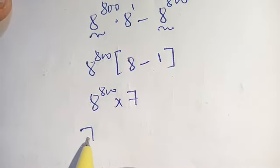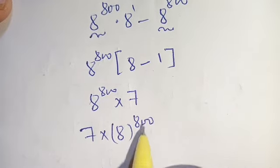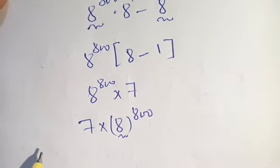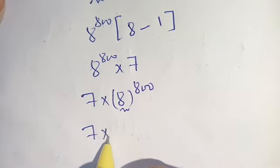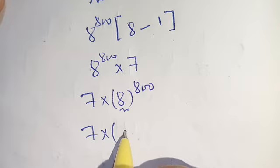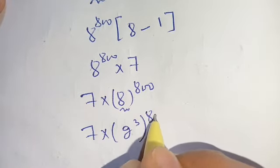We have 7 times 8 power 800. We can also break down 8 in terms of 2 and we write this as 7 times 8 can be written as 2 power 3 bracket power 800.